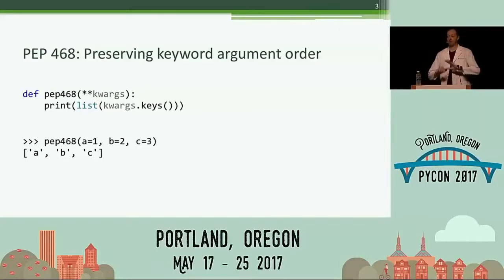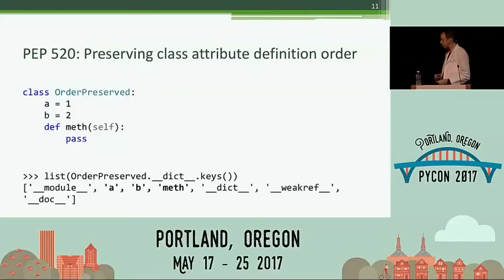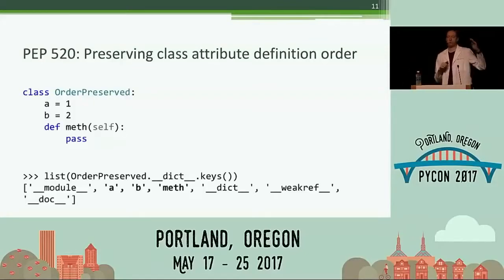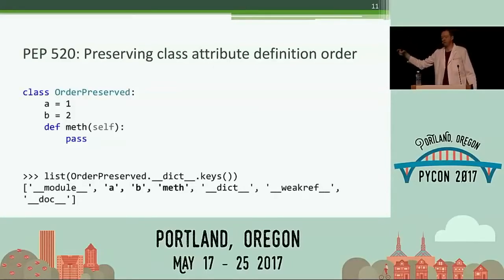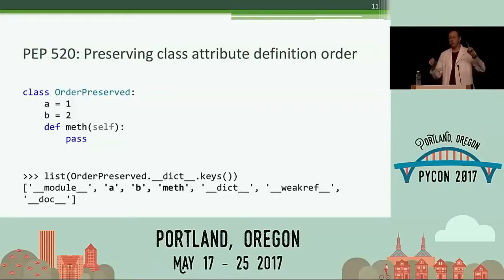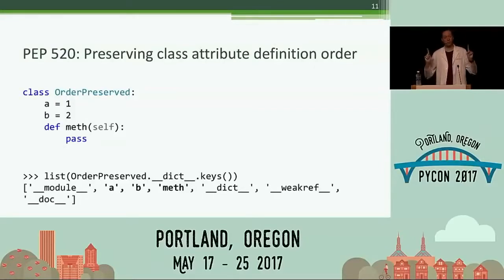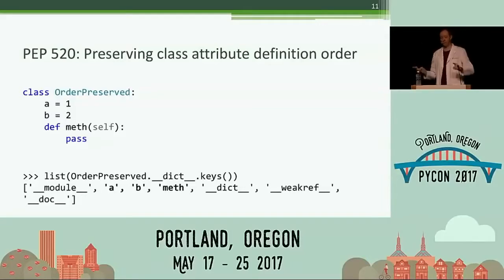I'm going to reiterate that multiple times. Much like the earlier prep where I talked about keeping the order of keyword arguments to a function call, this is the same thing except it keeps the order of the definition of attributes in a class. We guarantee that dunder dict will be a mapping that keeps order. Don't rely on dictionaries in general keeping this order for you.